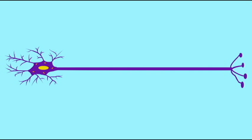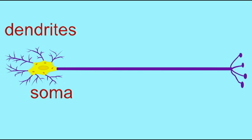There are three general sections to most nerve cells or neurons. First, there are the highly branched processes known as dendrites, which project from the cell body, also known as the soma.